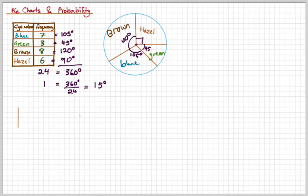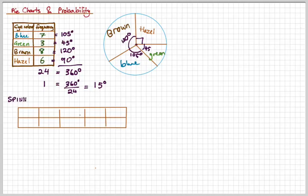So that's how we answer this pie chart question. Next, let's look at a different question. Let's look at a probability question. So let's look at a spinner. A spinner is a circle with an arrow. You spin the arrow and whatever it lands on is what you get.